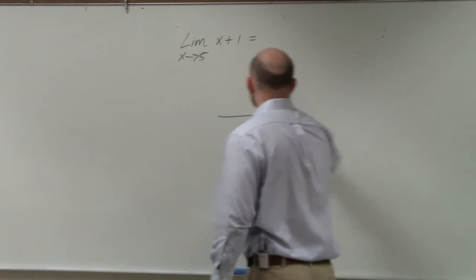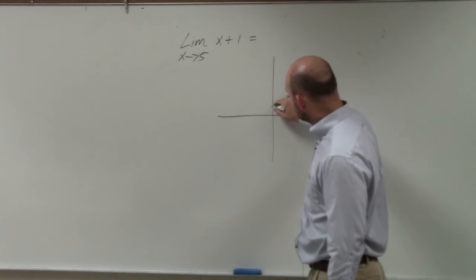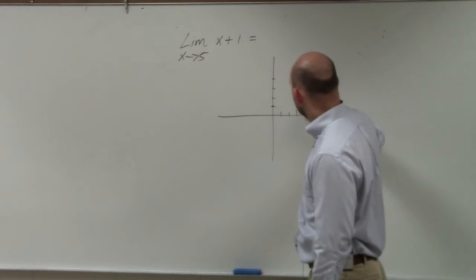Let's look at it graphically. I think that's usually the easiest. x plus 1 has a y-intercept at 1, and then over 1 up 1, over 1 up 1, over 1 up 1.